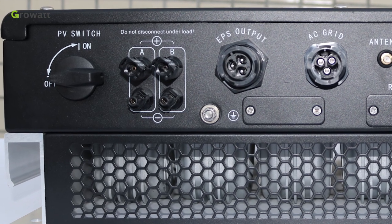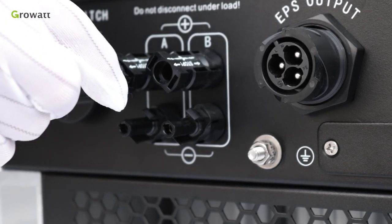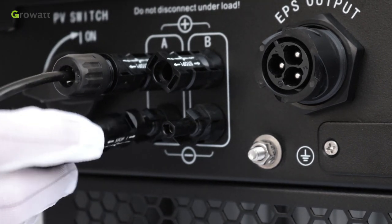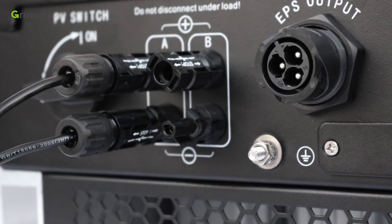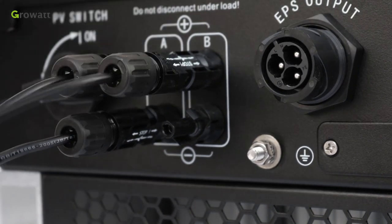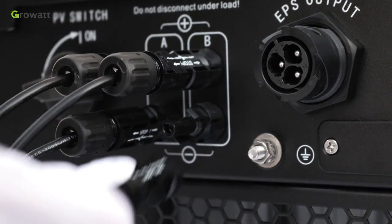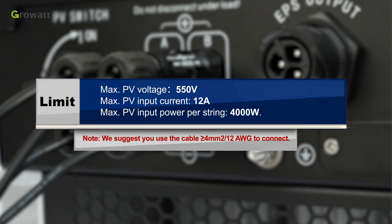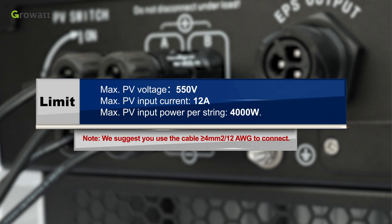1. Make sure the PV switch is off. 2. Similar to the traditional inverter, connecting the input of PV panel can be realized by using PV terminal. 3. Insert positive and negative cables of solar panel into the relative PV terminal of SPH. Limit maximum PV voltage 550 volts, maximum PV input current 12 ampere, max PV input power per string 4000 watts. Note, we suggest you use the cable which is greater than 4 square millimeters (12 AWG) to connect.